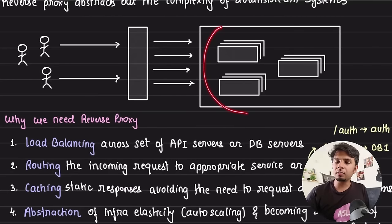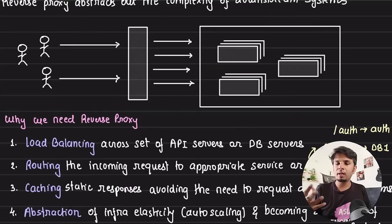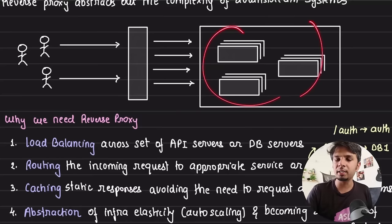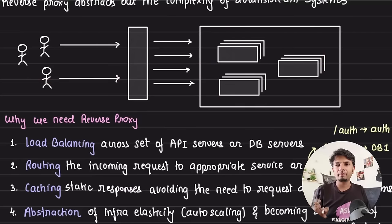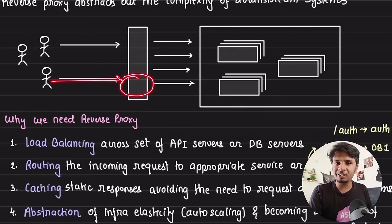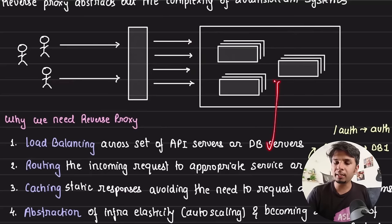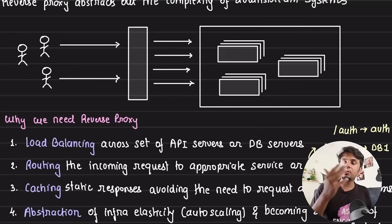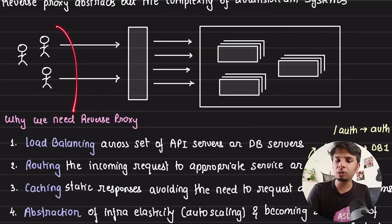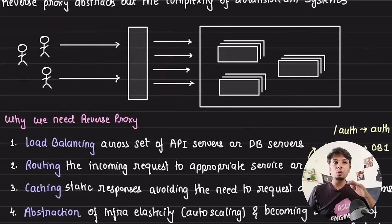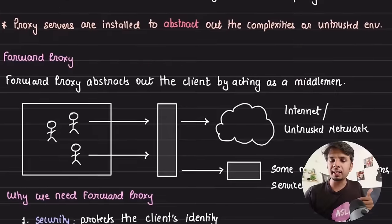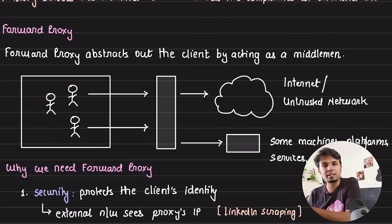Routing and load balancing are critical features; caching is also very important. The fourth benefit is abstraction — the reverse proxy hides the elasticity of the infrastructure. There could be 5, 10, or 15 servers behind it, but for the user the reverse proxy is a single point of entry. You always call the load balancer's domain name, and it routes to whichever server it chooses, making the infrastructure elastic — you can add or remove servers without affecting the user.